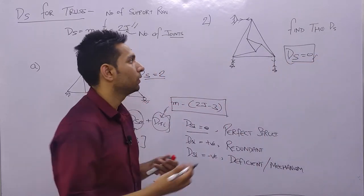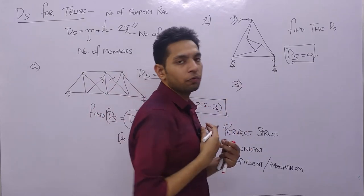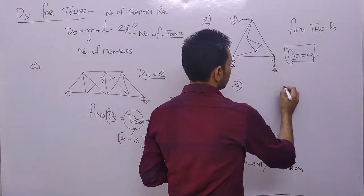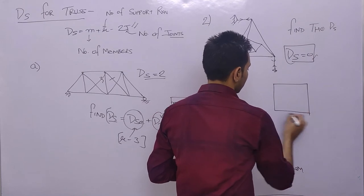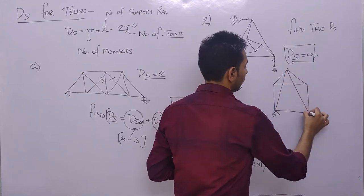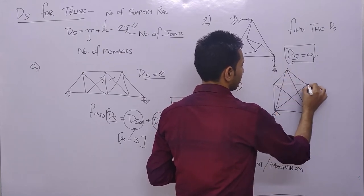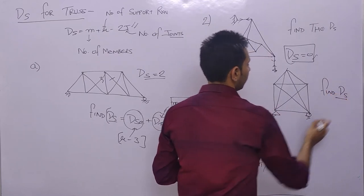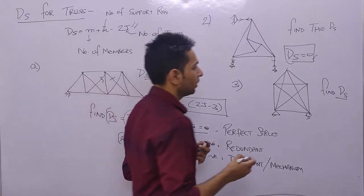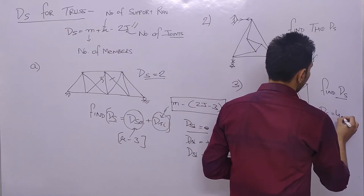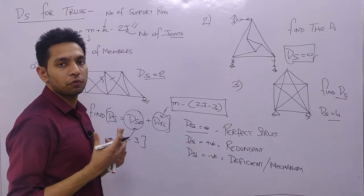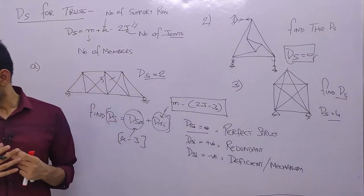The third type of truss question gives another structure and asks for the degree of static indeterminacy. Solving it yields ds equals 4. These represent the main types of previous year questions from trusses.